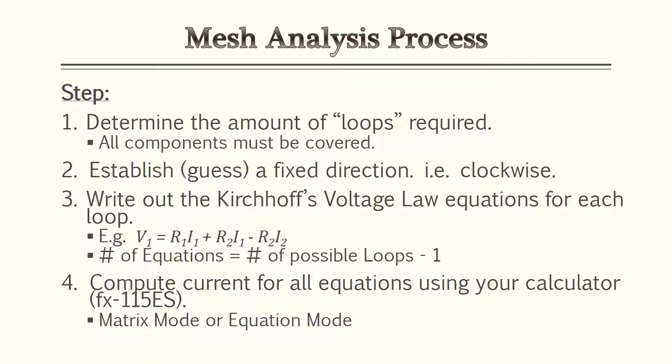The process for mesh analysis consists of four simple steps. One, determine the maximum amount of loops required for a circuit. Second, establish a fixed direction for these loops — usually clockwise, but as long as you're consistent it doesn't matter. Third, write out the KVL equations for each loop. Be advised: the number of loops minus one is the number of equations required. If you have four loops, you only need three equations.